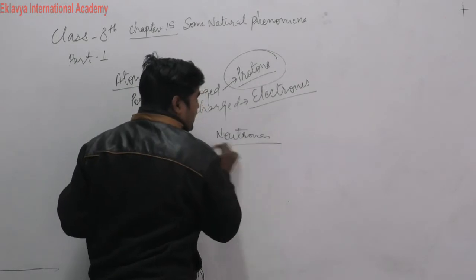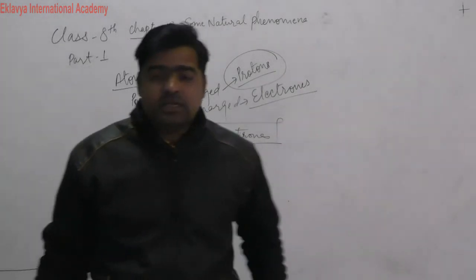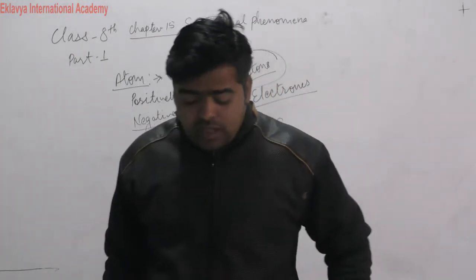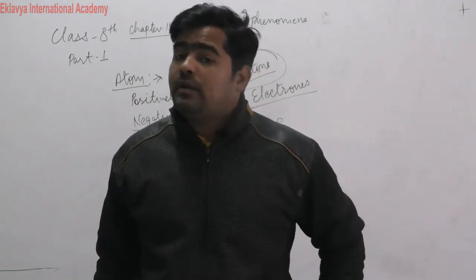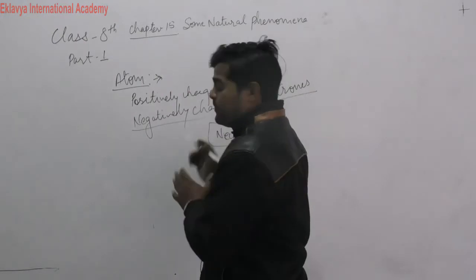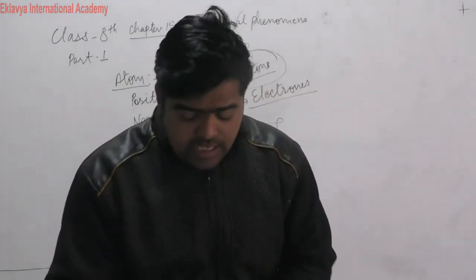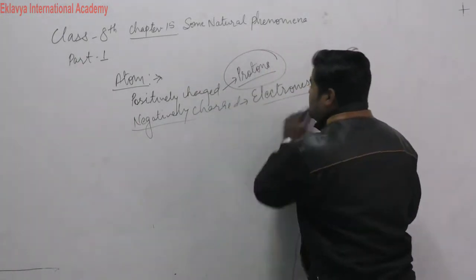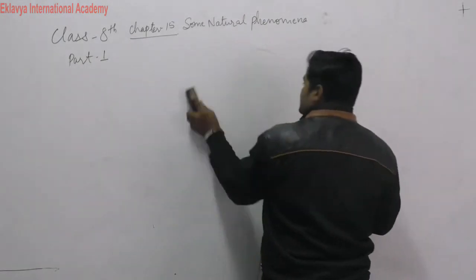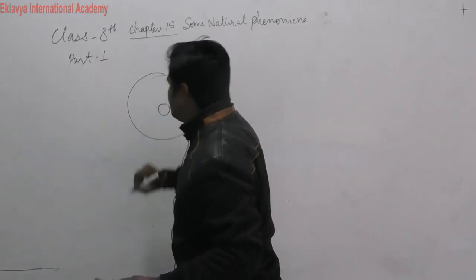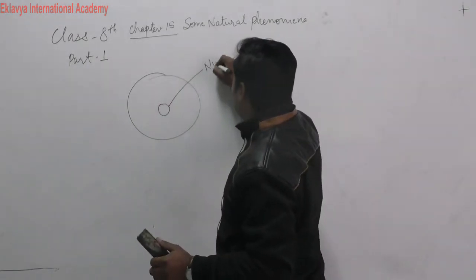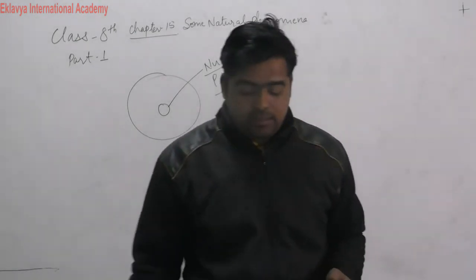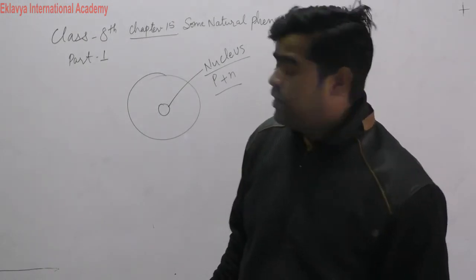Neutrons do not have any type of charge — there is no charge on them at all. So we have seen that the negatively charged particles are electrons and the positively charged particles are protons. An atom has a central part called the nucleus. Any atom's center part is called the nucleus, and this nucleus consists of protons and neutrons.